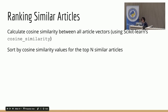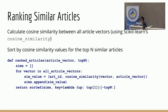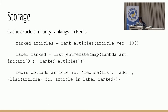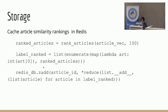We went through and calculated cosine similarity between all article vectors using scikit-learn's implementation of cosine similarity. Then you simply sort by all of these values and get the top N similar articles. We also cached the article similarity rankings in Redis, using the sorted set storage. You can then use z-range by score to get a nice list of the most similar articles — for example, the top 100 most similar articles.